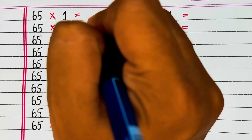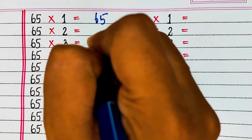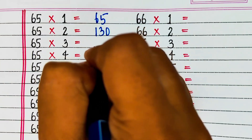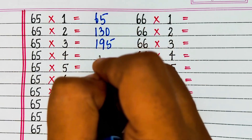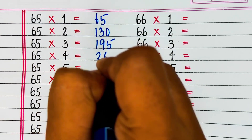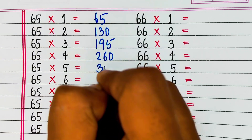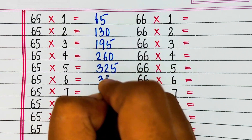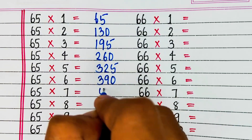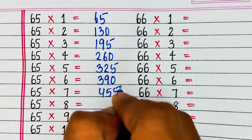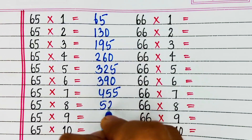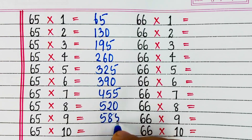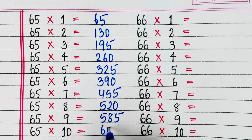Next is table of 65. 65 4s are 260, 65 5s are 325, 65 6s are 390, 65 7s are 455, 65 8s are 520, 65 9s are 585, 65 10s are 650.